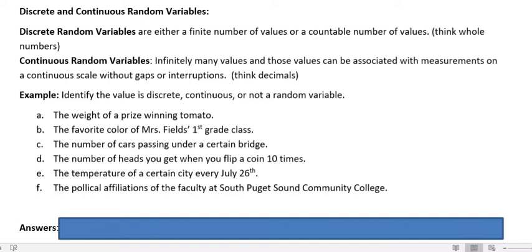C, the number of cars passing under a bridge. Well you could stand there and count the number of cars that pass under a bridge because it's a countable number. So that's discrete.